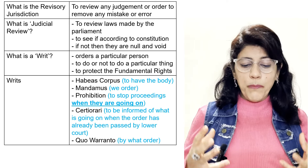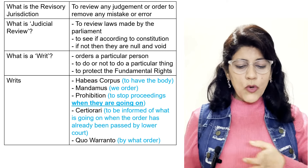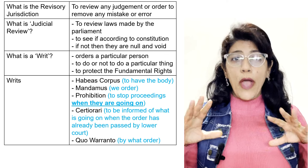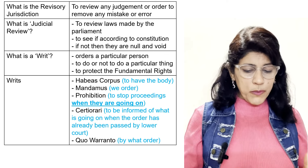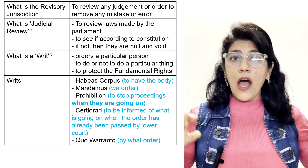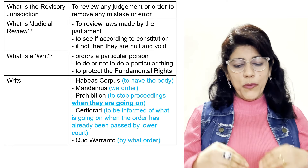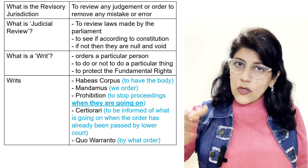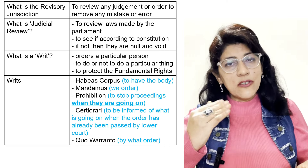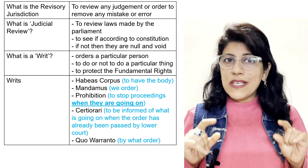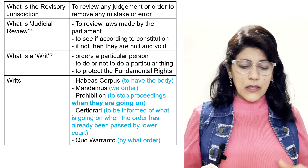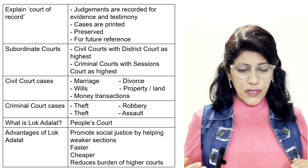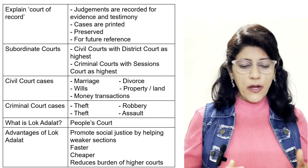What is a writ? An order to a particular person or institution to do or not to do a particular thing, to protect fundamental rights. Types of writs: Habeas Corpus — to have the body; Mandamus — we order; Prohibition — to stop proceedings while they are still going on; Certiorari — to be informed of what is going on when a case order has already been passed by the lower court. The difference between Prohibition and Certiorari: Prohibition is issued when proceedings are still going on; Certiorari is when the order has already been passed. Quo Warranto — by what order. Court of record: judgments are recorded for evidence and testimony; cases are printed and preserved for future reference.